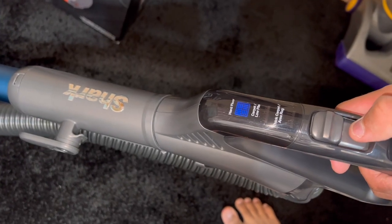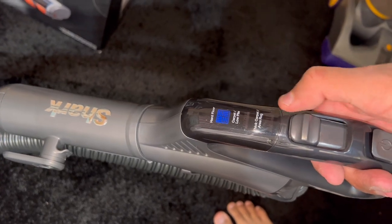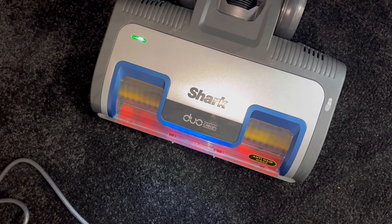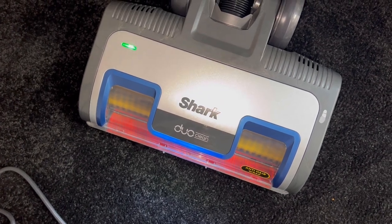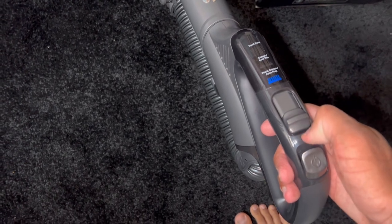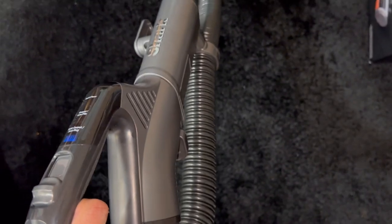Its default setting out of the box was the hard floor setting. When we choose either of the carpet power settings, the brush bar speeds up. On hard floor mode, the brush is slower. Then you've got the quick power boost setting which gives you more airflow out of these vents on either side of the handle.